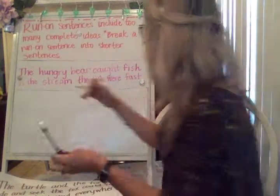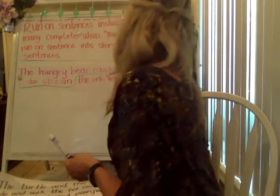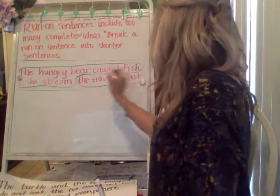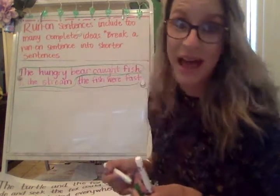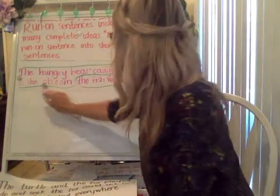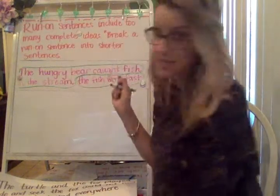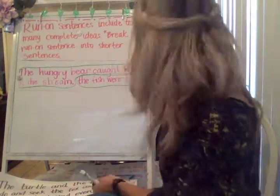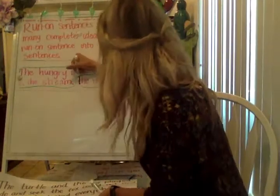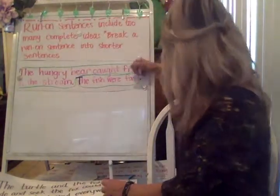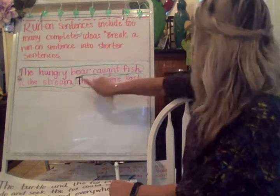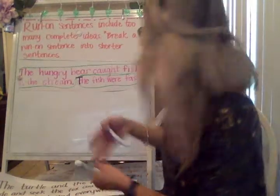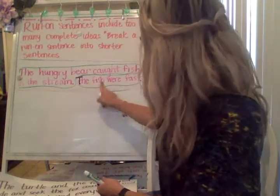I'm going to put a big circle around one complete thought, and then put my circle around the second complete thought. I'm going to add in my punctuation. 'The hungry bear caught fish in the stream.' That's where I put my period — it's not asking a question and not saying anything in an excited voice, so no question mark or exclamation mark. 'The fish were fast.' I'm going to put a period. It's not a run-on sentence anymore — they're complete sentences because they're complete thoughts.